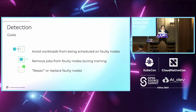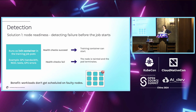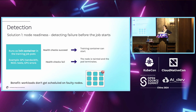Resolution starts with detection. The goals of detection are: (a) avoid workloads from being scheduled on faulty nodes, (b) remove pods from faulty nodes during training and reschedule them on healthy nodes, and (c) repair or replace faulty nodes. The first detection solution is node readiness — detecting failures before the job starts using an init container that runs health checks such as GPU bandwidth tests, NCCL tests, and GPU stress tests. If health checks succeed, you move on to the training job; if they fail, the node is tainted and the pod is rescheduled.